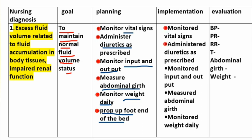Implementation: monitor vital signs, administer diuretics as prescribed, monitor input and output, measure abdominal girth, and monitor weight daily. Evaluation parameters include: blood pressure, pulse rate, respiratory rate, body temperature, abdominal girth, and body weight.